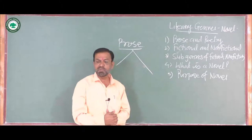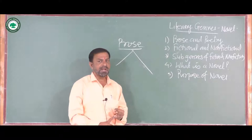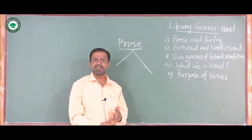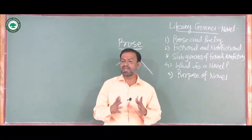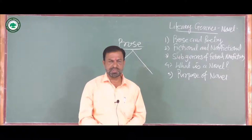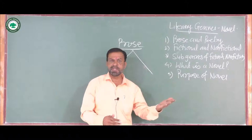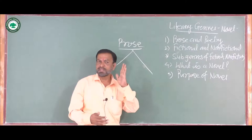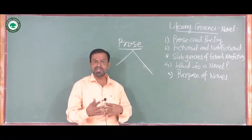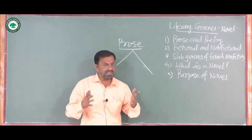Just like we have novel, short story, drama, fairy tales, narrative, parables, folklore, biography and autobiography — these are the sub-genres of prose. As far as poetry is concerned, it may be subjective or objective. It has common features: lyrical quality, rhyme, rhythm, etc. We have different types of poetry as well.